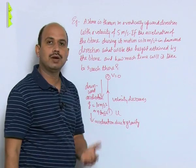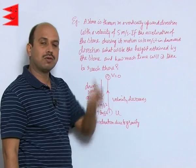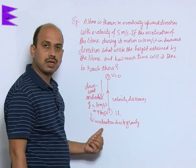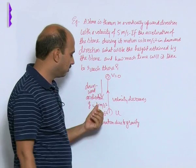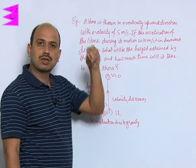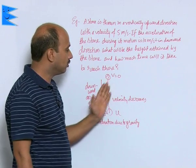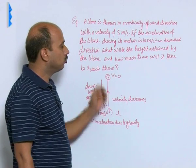When the body is thrown vertically up or it is dropped from height we use this acceleration. If the body is going up we use this value negative, when the body is coming down we use this value as positive. Now, by using this concept you have to solve this question.